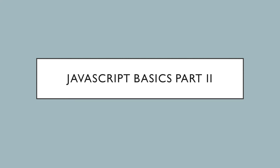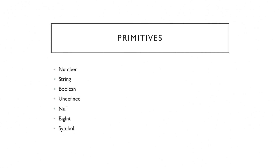Hello everyone and welcome to the continuation of the JavaScript Basics lecture in this part 2. In the previous course we covered the main primitives of JavaScript, the seven of them, and today we're going to look at something called objects.